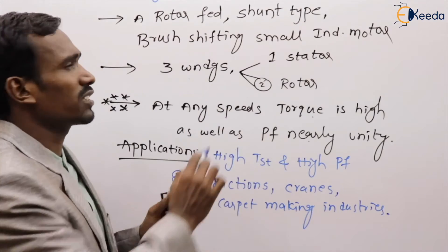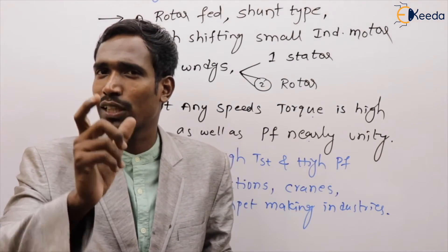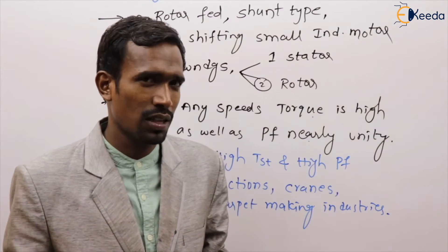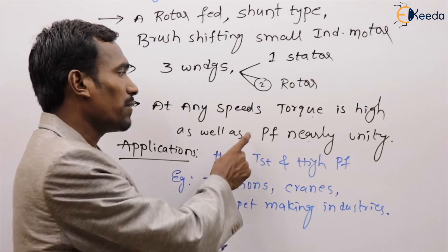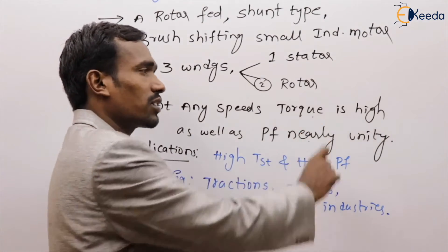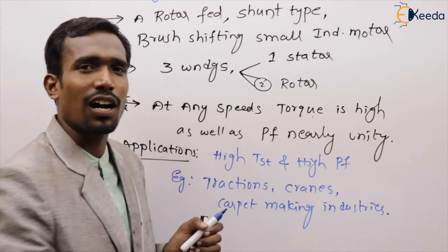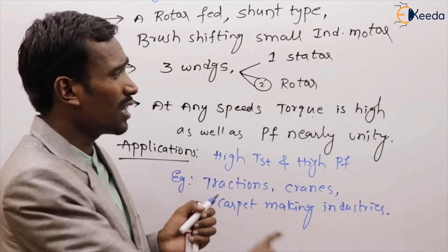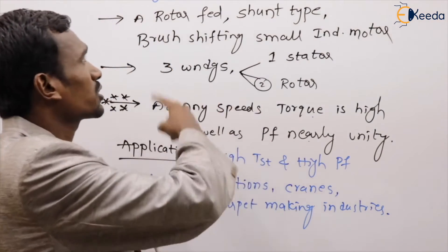To summarize: the Schrage Motor is a rotor-fed, shunt-type, brush-shifting induction motor with three windings — two for the rotor. The power factor is very high at any speed, and torque is also high. That is why these motors are used in traction, cranes, and carpet making industries. These are very commonly repeated exam questions.